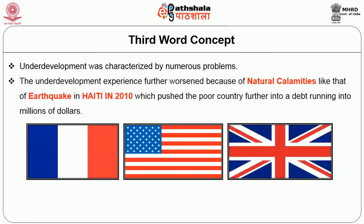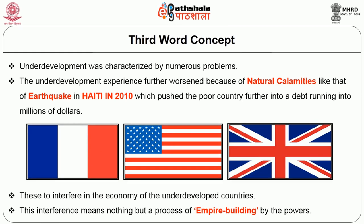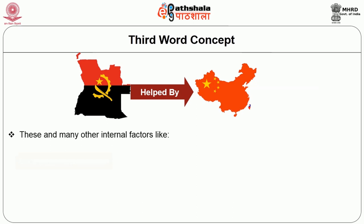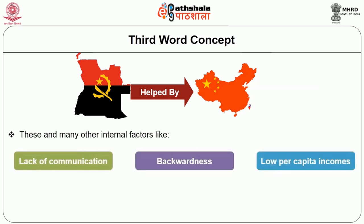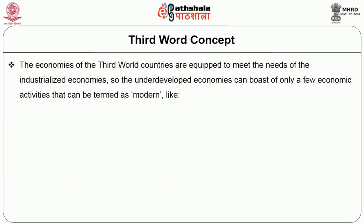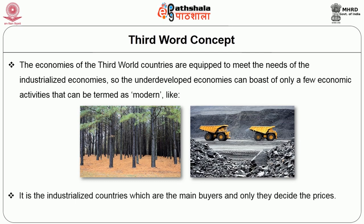Powers like France, United States and United Kingdom interfere in the economies of underdeveloped countries — a process of empire building. Angola is a country being held by China, where the latter dominates the former. Underdevelopment is also caused by low division of labour and the traditional attitude of the population. Internal factors like lack of communication, backwardness and low per capita income are responsible for underdevelopment. Lack of motivation is another factor; the economies of third world countries are geared to meet the needs of industrialized economies, with only a few modern activities like plantations and mining.